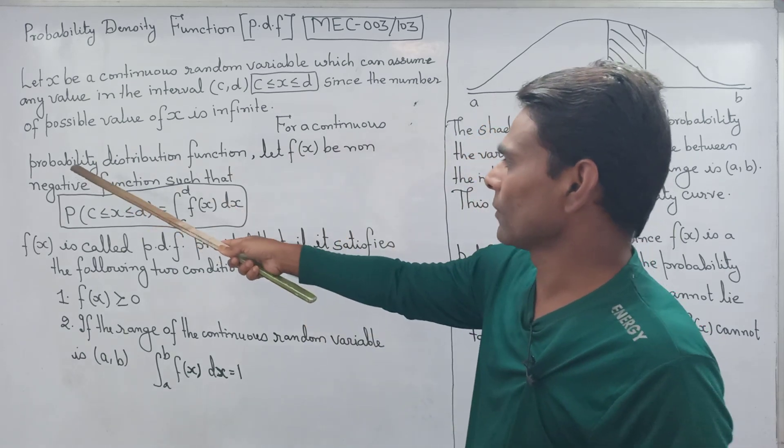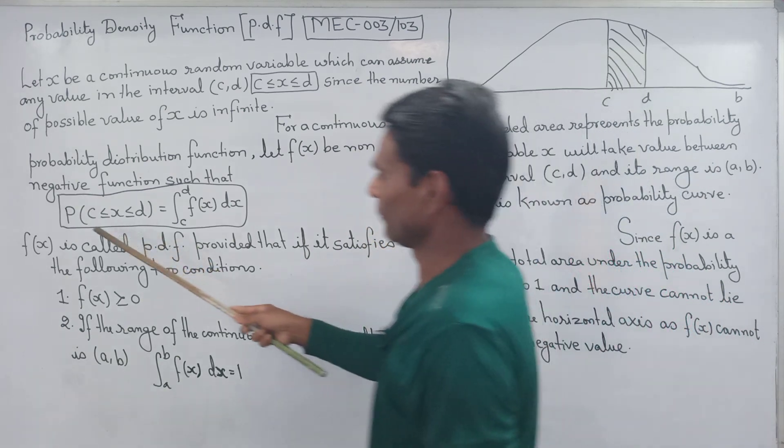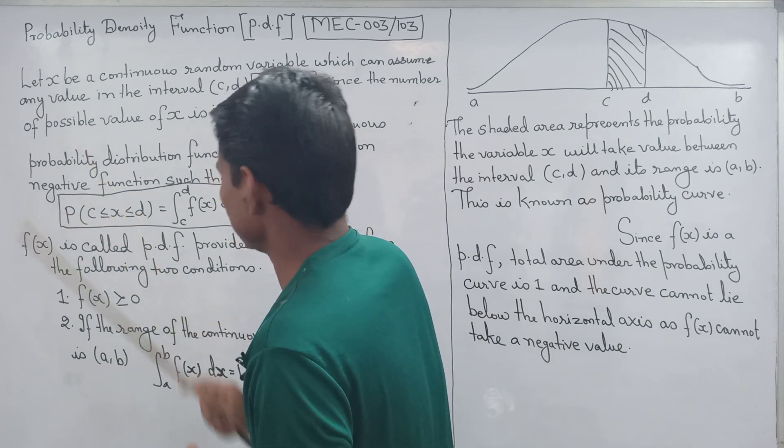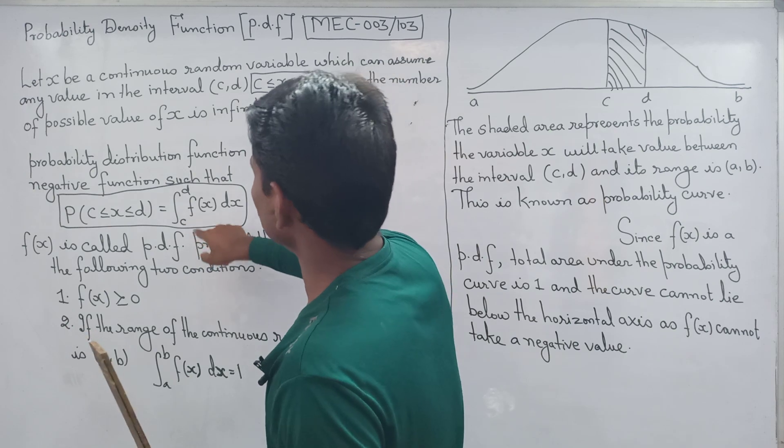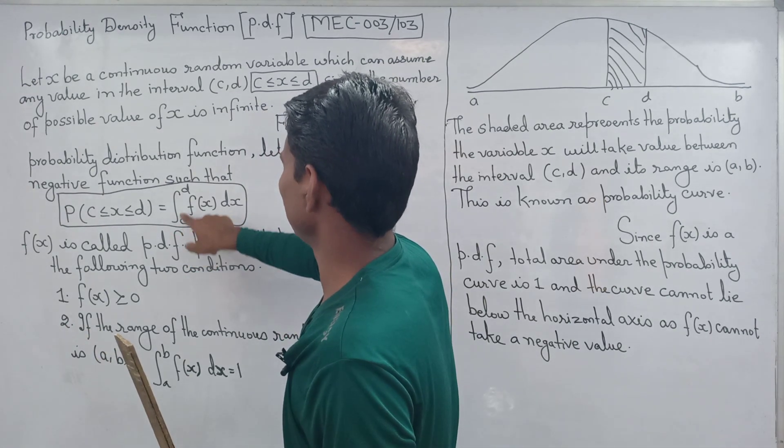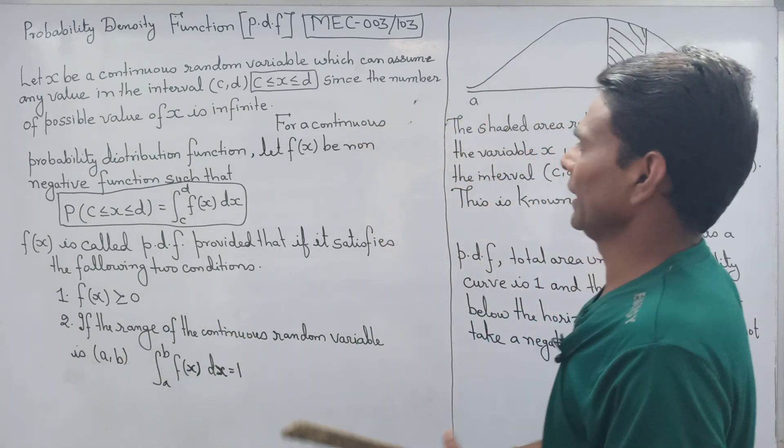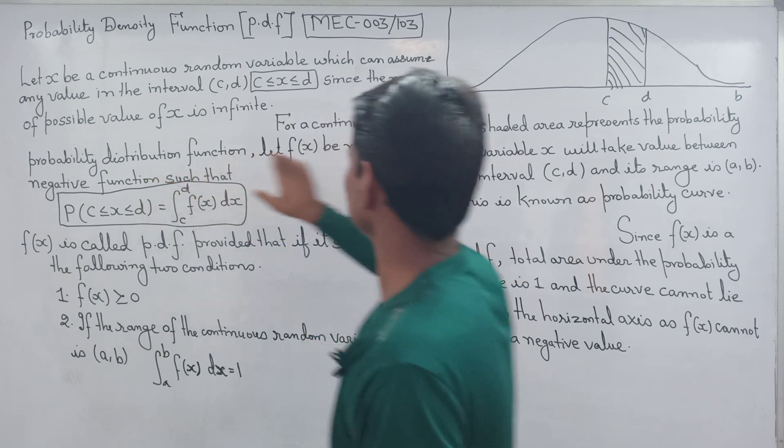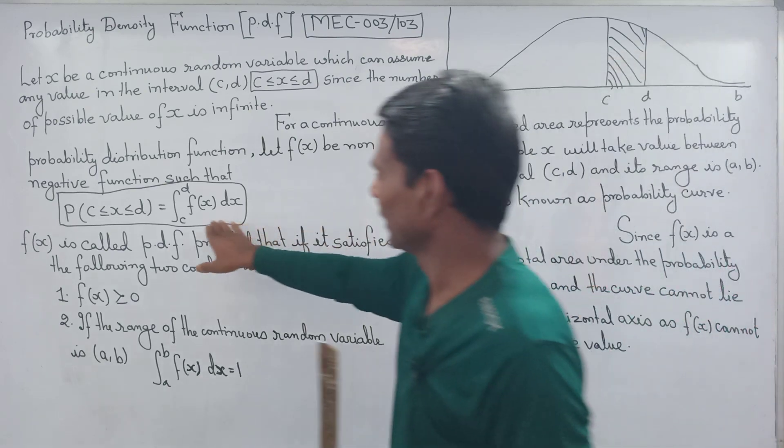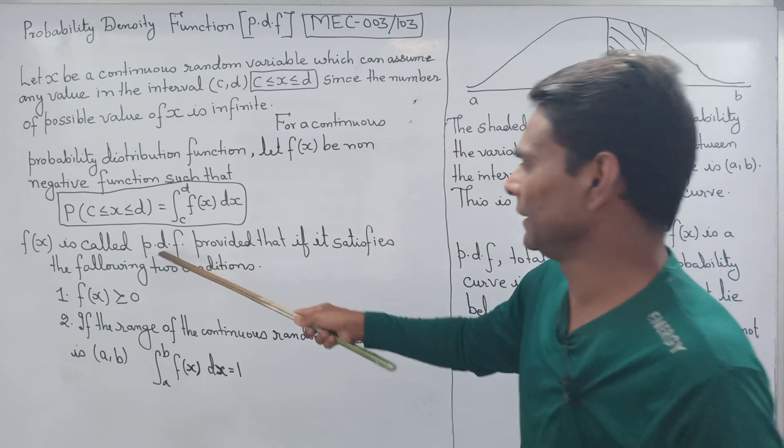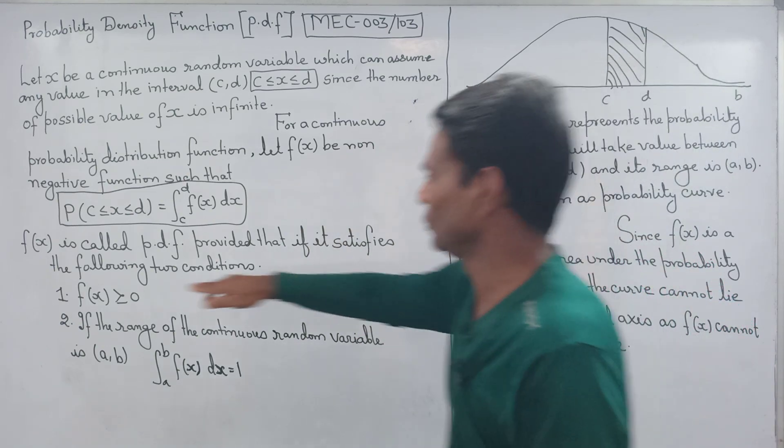Since the number of possible values of X is infinite, it should be a continuous set. For a continuous probability distribution function, let FX be a non-negative function such that probability P(C ≤ X ≤ D) equals the integration of FX with respect to X. FX is called PDF, probability density function, provided it satisfies the following conditions.